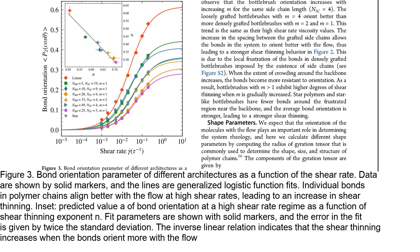This section demonstrates the correlation between the predicted value of bond orientation at high shear rate and the shear thinning exponent. The inverse linear relation between bond orientation parameter A and exponent N indicates that shear thinning increases when the bonds align more with the flow.